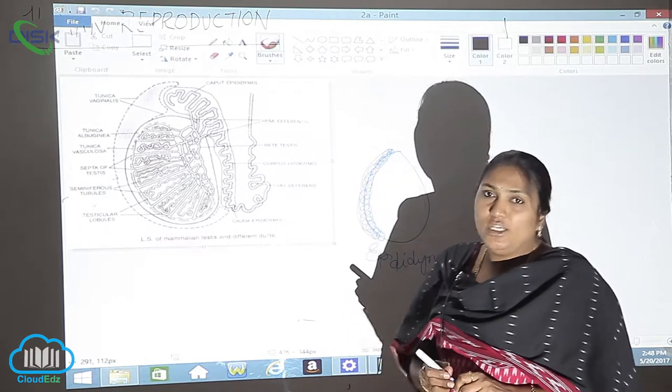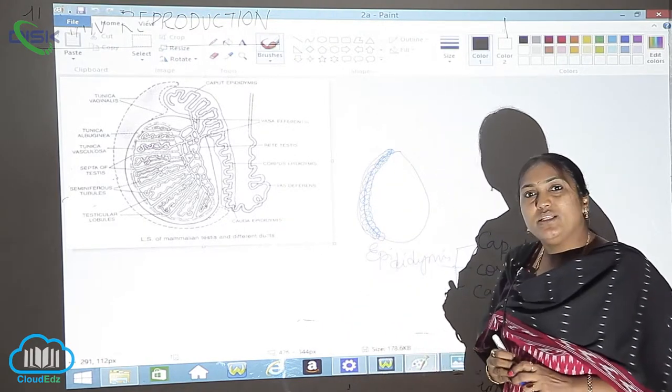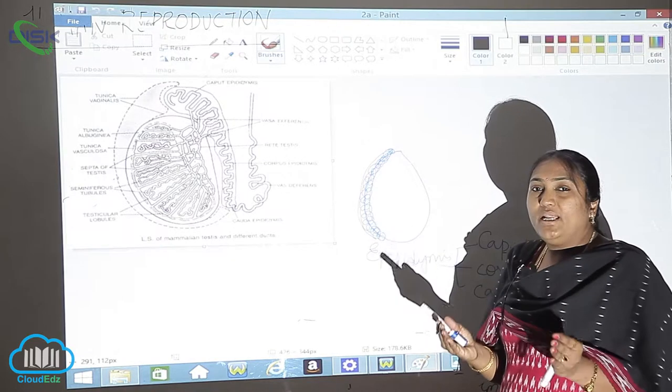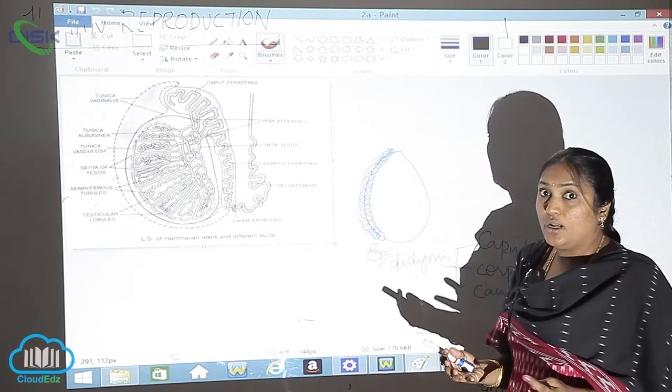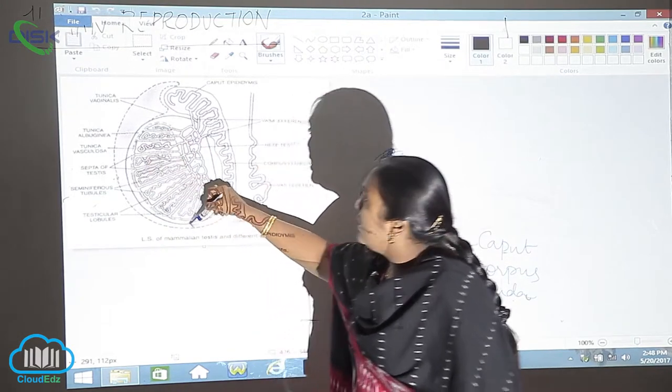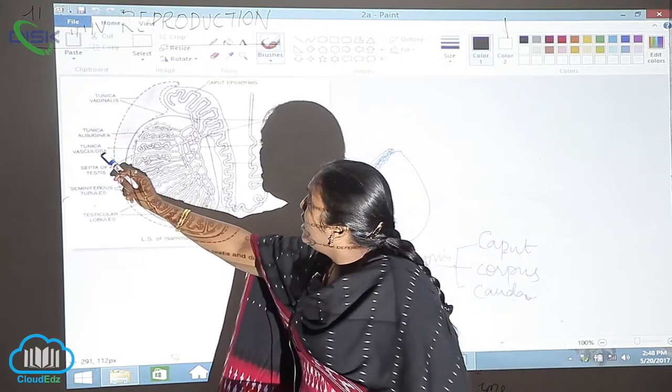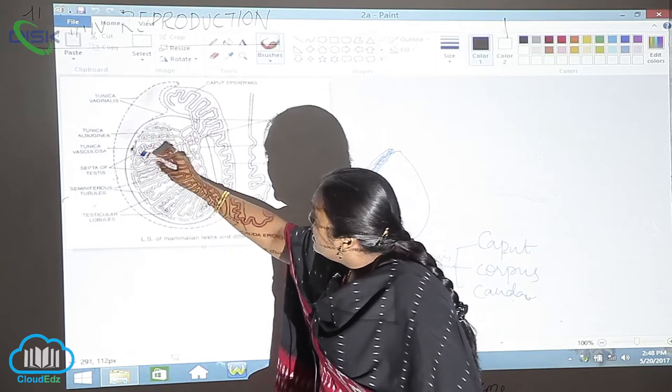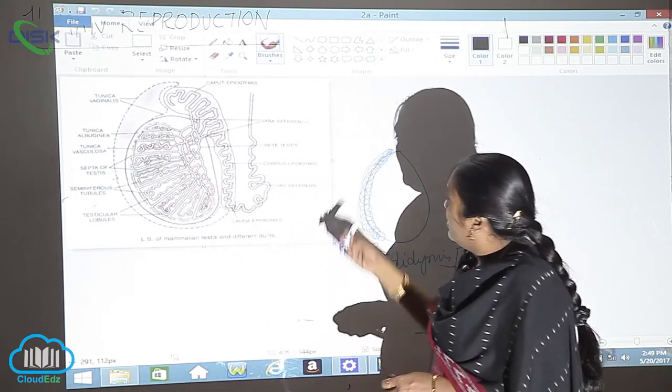In the name only it is there, albigenia means white. A complete white fibrous layer you can see very clearly. That is called the tunica albigenia. And the next is the tunica vesiculosa. Can you see the muscle-like structures here?